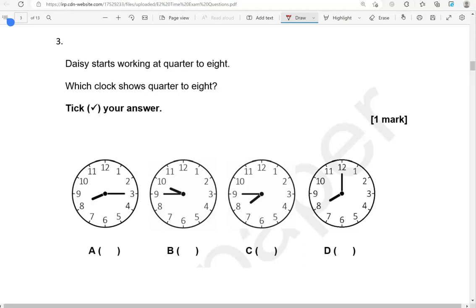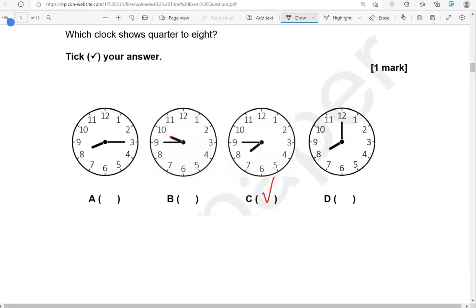Daisy starts working at quarter to eight. So, quarter of an hour to get to eight o'clock. Which clock shows quarter to eight? Tick your answer. Option A shows quarter past eight. Option B shows quarter to ten. Option C shows quarter to eight. So, C is the correct one. D shows eight o'clock, which is incorrect.